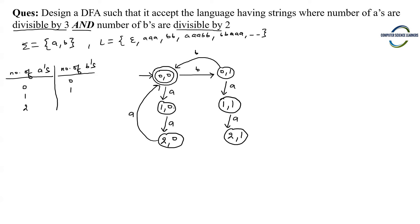From (1,0) on 'b', number of a's remains 1 and number of b's becomes 1, so we go to (1,1). From (1,1) on 'b', number of a's remains 1 but number of b's becomes 2, and 2 modulus 2 gives remainder 0, so we go to (1,0).